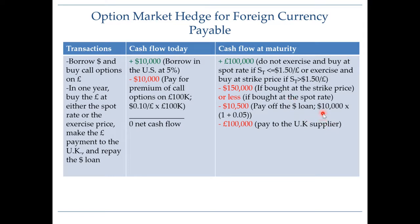After a year, if the future spot rate happens to be lower than the exercise price of $1.50, we will not exercise the call option. Why would we buy pounds at the higher rate of $1.50 when we can go directly to the spot market and buy at a lower rate like $1.30, $1.20, or $1.40? So if the future spot rate is less than or equal to $1.50 we do not exercise, but if it is greater than $1.50 we will exercise the call option.